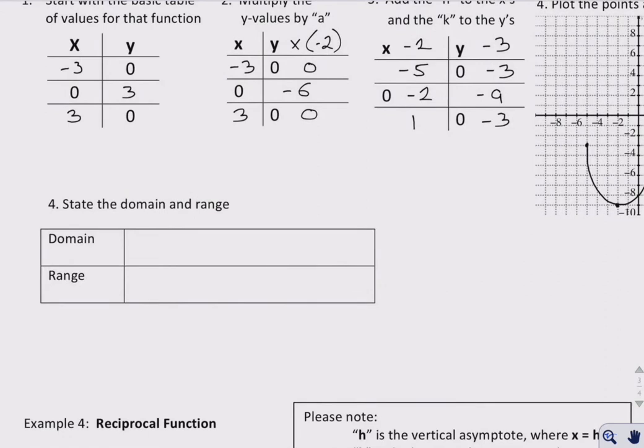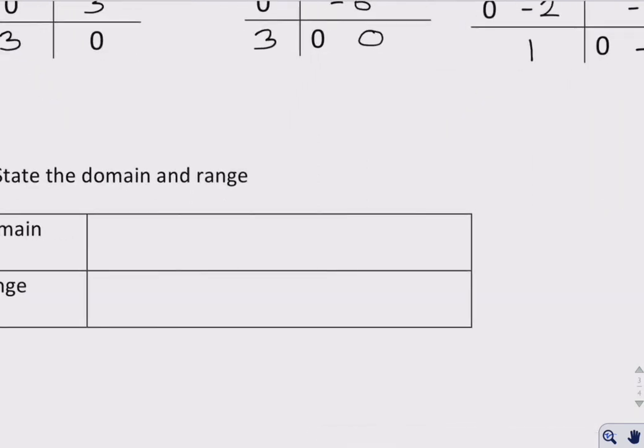So how does that affect our domain and range? Well, our domain is going to be everything in between negative 5 and 1, including negative 5 and 1.